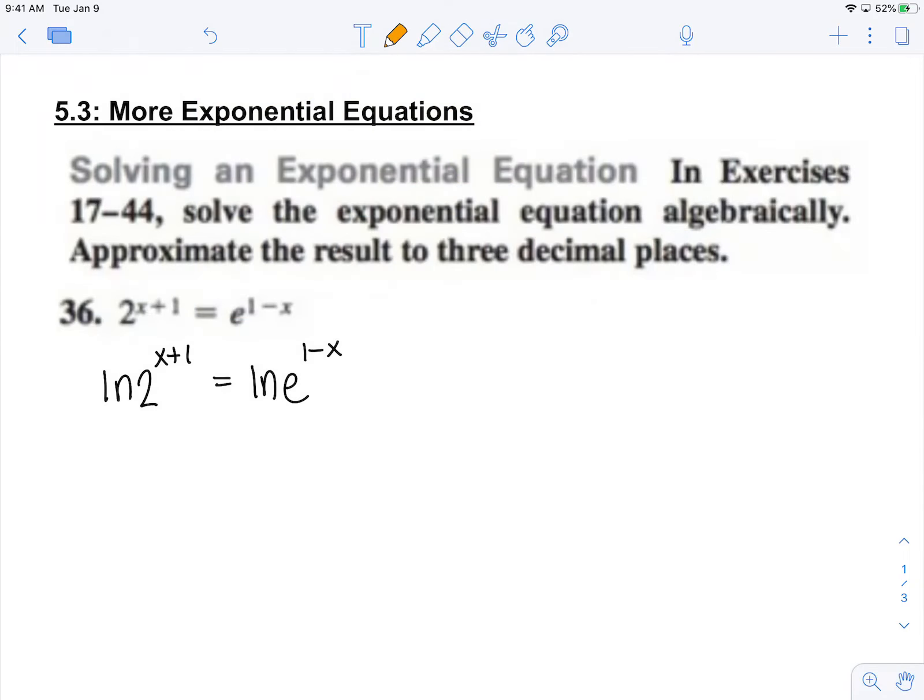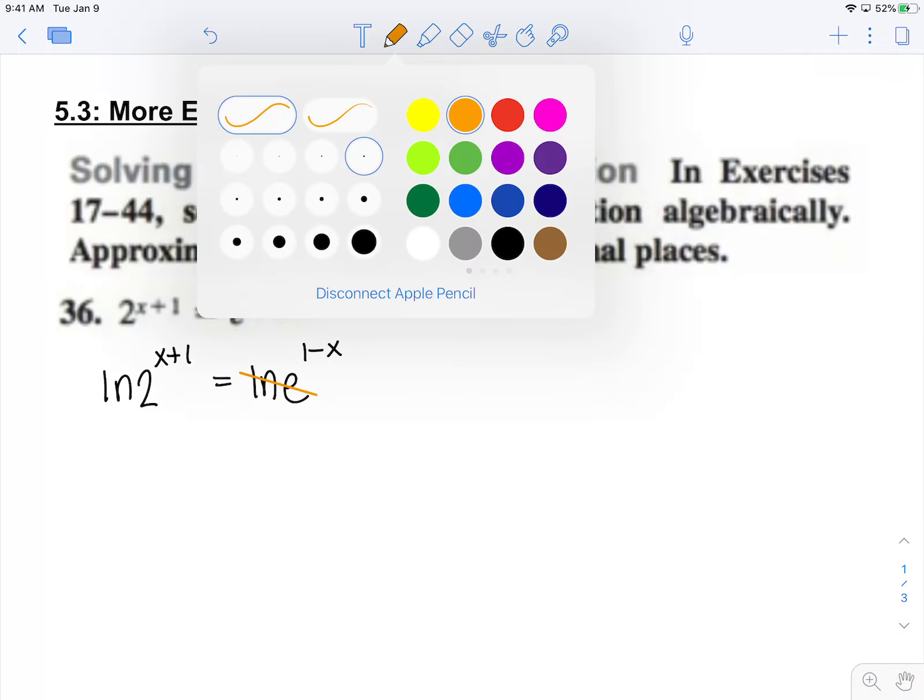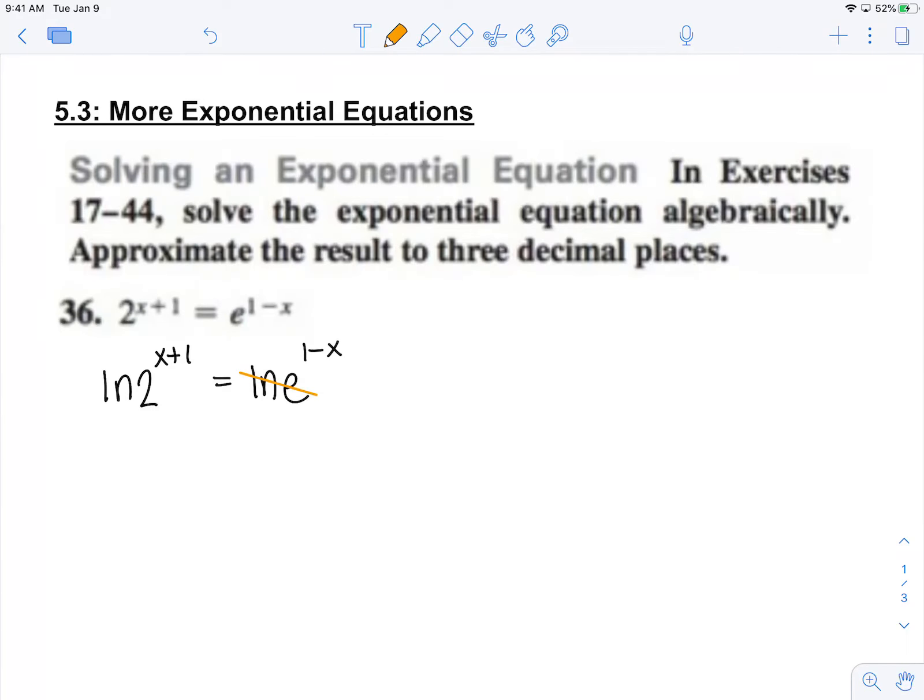Now ln of e does cancel and then I can use properties of logarithms to bring this exponent down. So I have x plus 1 times ln 2 equals 1 minus x.